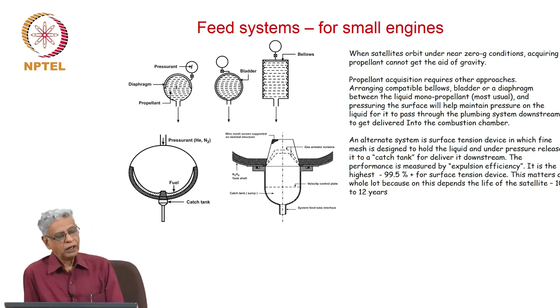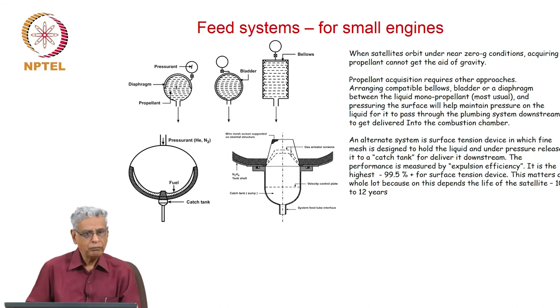If propellant is in short supply, the life is reduced. Typical life is 10 to 12 years. It is better to look for higher expulsion efficiency systems. An alternate system developed from an MIT student project is the surface tension device. You have a very fine mesh with liquid held between the meshes by surface tension. It is so strong that you can apply pressure and the fluid will be delivered through the system. This expulsion efficiency is better than 99 percent, 99.5 percent. All satellite propellant systems in India have surface tension based expulsion devices.